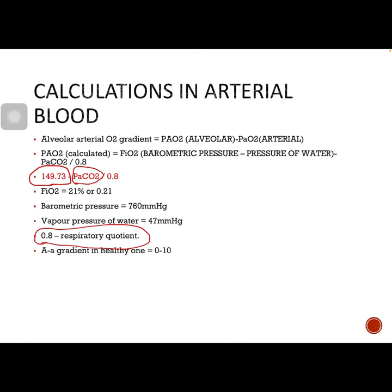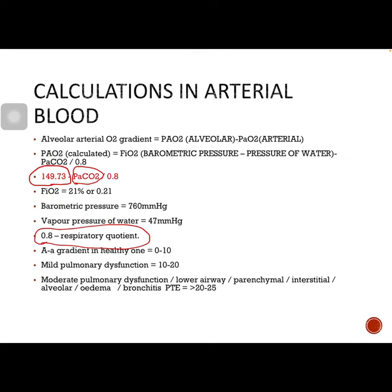Anything more than 10 is abnormal. An AA gradient between 10 and 20 indicates mild pulmonary dysfunction. An AA gradient more than 20 indicates parenchymal, interstitial, or alveolar problems — sometimes pulmonary edema and bronchitis. A very high AA gradient, more than 25, usually indicates pulmonary thromboembolism.